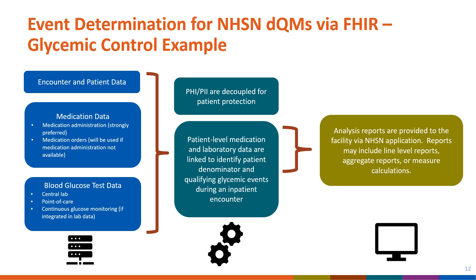Using the glycemic control DQM as an example, we consider encounter inpatient data, medication data — preferably using medication administration, however medication requests will be used if administration is not available — and blood glucose test data. PHI and PII are decoupled from the data, and the data elements are linked to identify patient denominator and qualifying glycemic events during an inpatient encounter. The linked data elements are then used to generate analysis reports provided to the facility through the NHSN application, which may contain line listings, aggregate reports, or measure calculations.